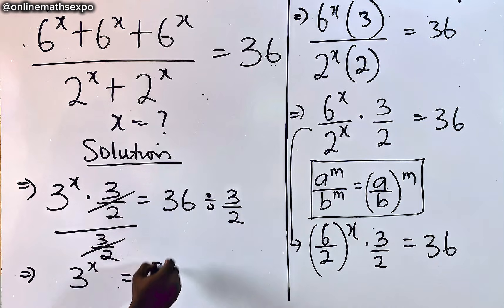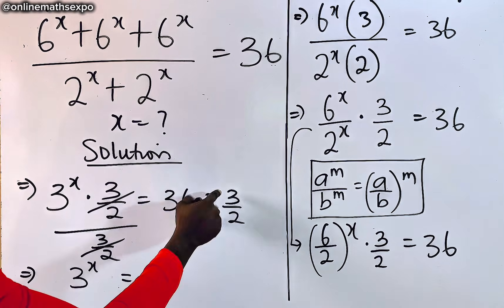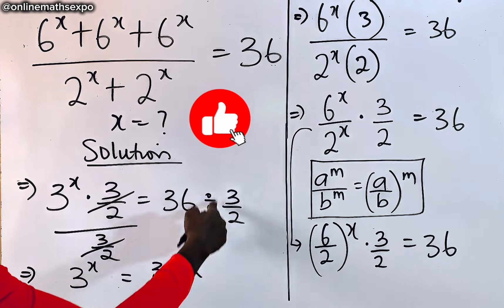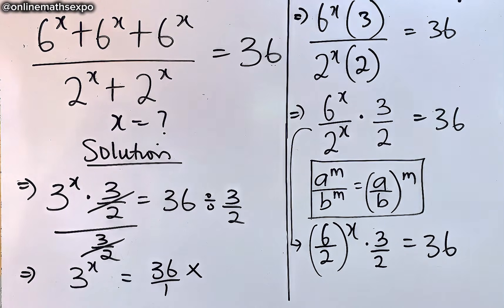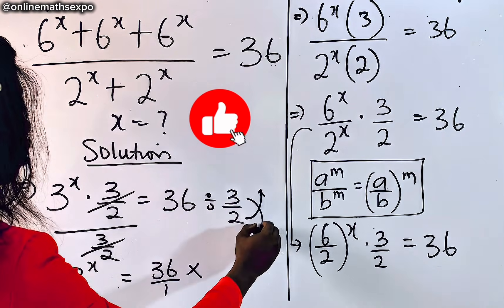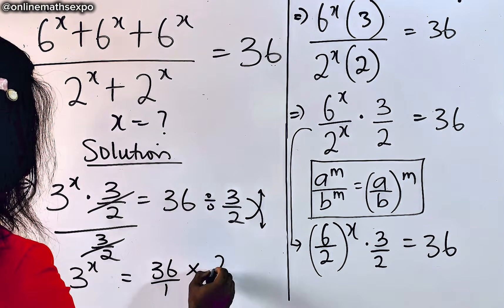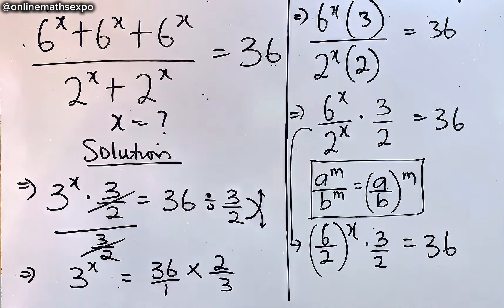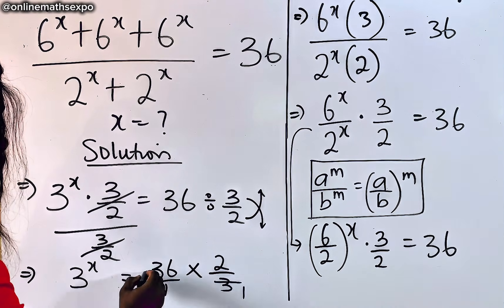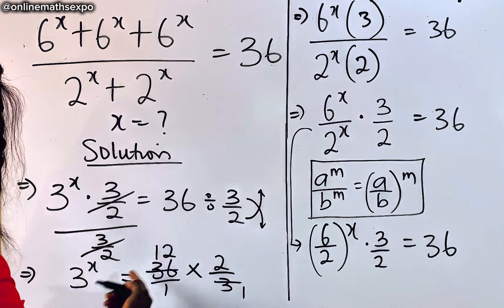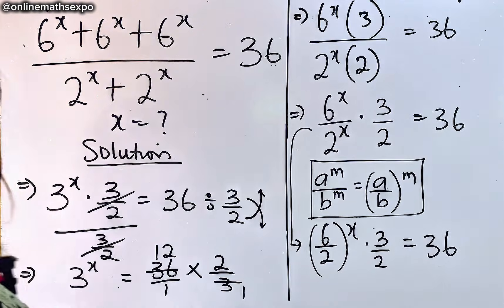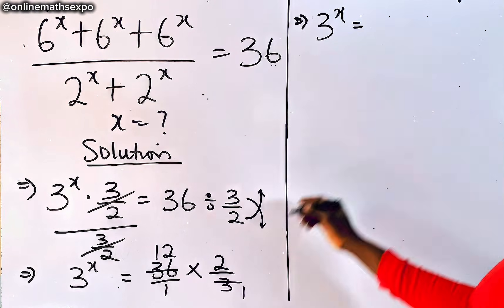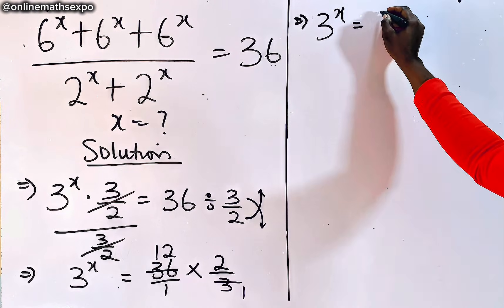Remember, this is 36 over 1. Then to change division to multiplication, you reciprocate the next fraction — so this goes up and this comes down, giving us 2 thirds. This simplification gives us 12, so we keep solving: we have 3 to the x-power is equal to 12 times 2, which gives us 24.